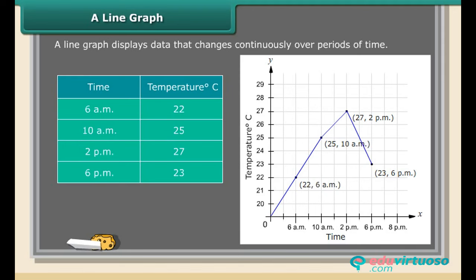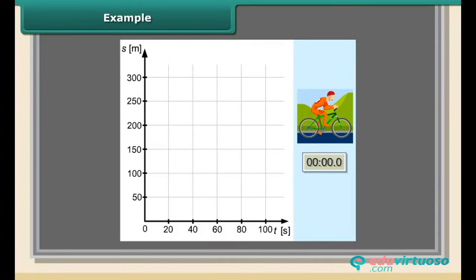From the graph, in between 10 a.m. and 2 p.m., we can find that the temperature was increased by 2 degrees Celsius. This is the location-time graph for a cyclist. While plotting the graph, the short movements of time where the cyclist changed his speed were neglected. From the graph, we can determine the location of the cyclist at a given movement.